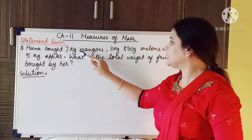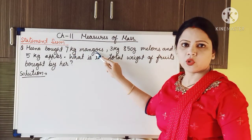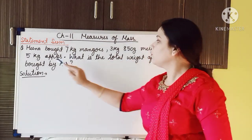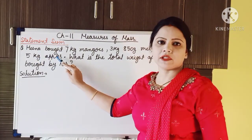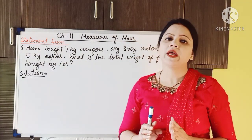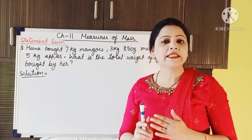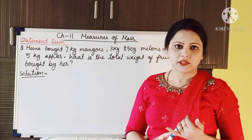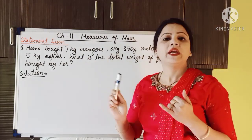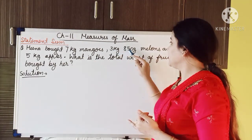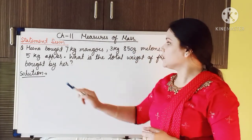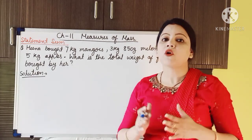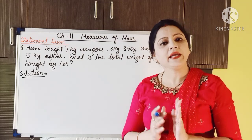Hina bought 7 kg of mangoes, 3 kg and 850 gram of melons, and 5 kg of apples. Hina is a girl who has gone to the fruit shop and purchased mangoes, melons, and apples — mangoes 7 kg, melons 3 kg 850 gram, and apples 5 kg. We have to find the total weight of all the fruits bought by her.